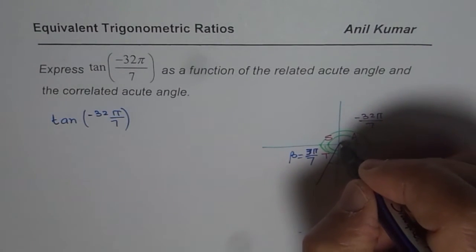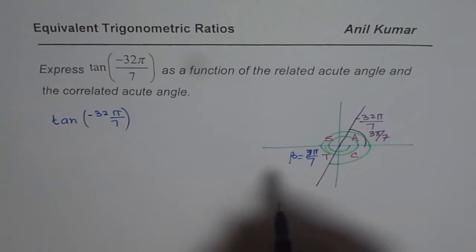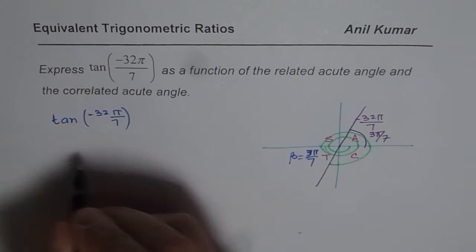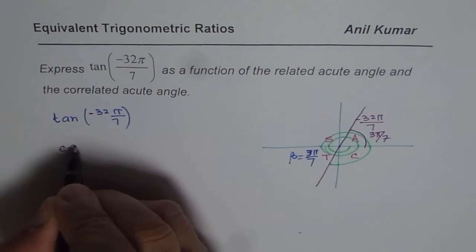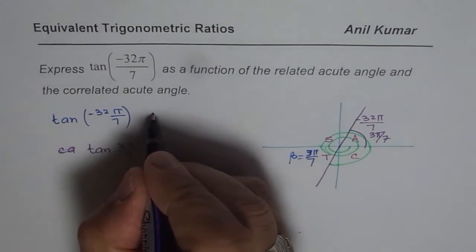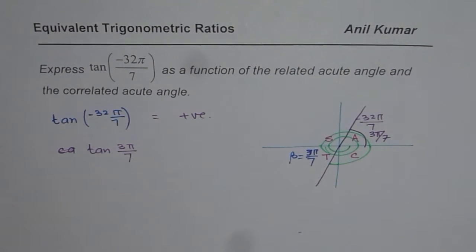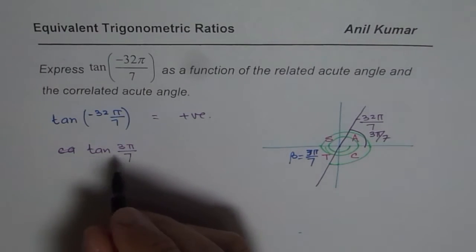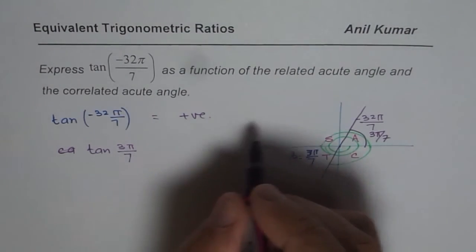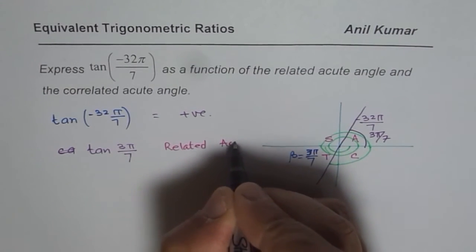Always we can consider this to be in quadrant 1 and this angle α, the related angle will be 3π by 7. Is it okay? So I can write this as tan of, I mean tan of 3π by 7. Correct? That will give us positive answer because this is positive, right? Remember that. Quadrant 3. So tan of 3π by 7 gives us the value as a related acute angle. This is in terms of related acute angle, right?